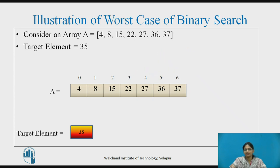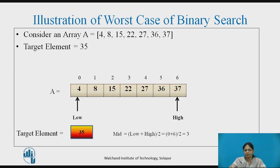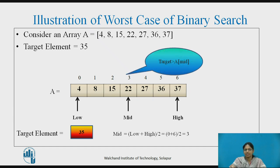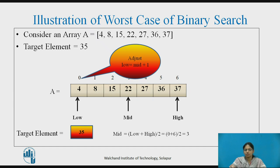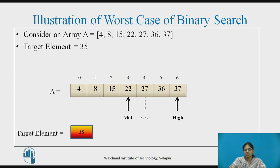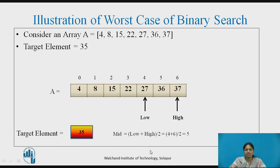Let us see the illustration when the worst case of binary search is achieved. Consider the same array and we want to find the target element 35. Low is adjusted to 0 and high to size minus 1. Mid is computed as 3. The target is greater than A[mid], so we adjust low to mid plus 1. In the next iteration, the new mid is computed as 5, and we verify that low is less than high.